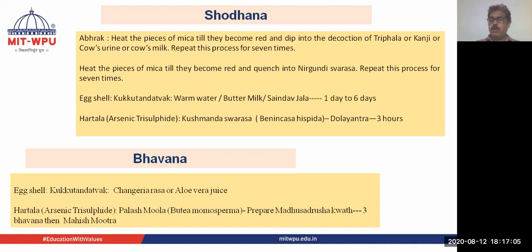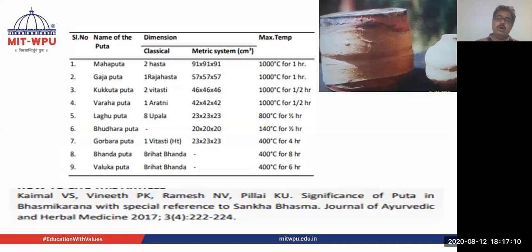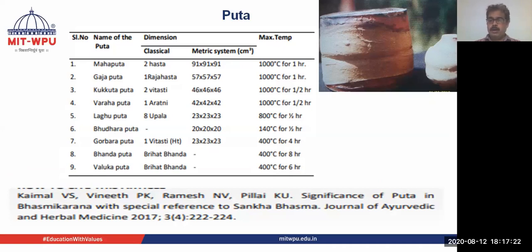Once Shodhana is done and Bhavana has been given, we go to the Marana process. Marana means killing, and the Marana process should be carried out in a pit. As per Ayurveda, different Putas are mentioned: Mahaputa, Gajaputa, Kukutaputa, Varaputa, and Laguputa. The dimensions of Putas and the maximum temperature each attains are specified.